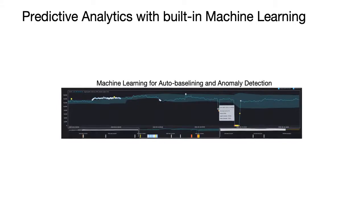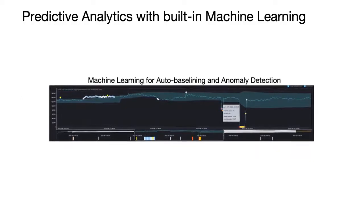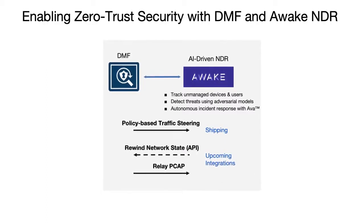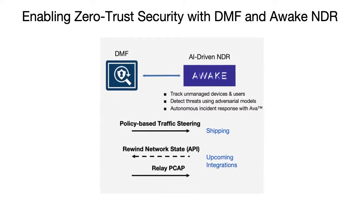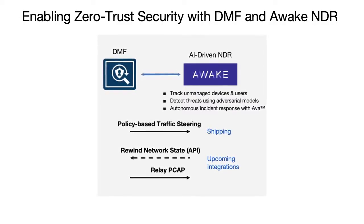The analytics node's machine learning capability dynamically identifies anomalous network behavior through auto-baselining. DMF integrates with Awake Security, Arista's recent security acquisition, to deliver traffic to various network detection and response ingest points, thus bringing zero-trust security to enterprises. DMF's scale-out fabric ensures that NDR security tools receive all the relevant traffic to detect and hunt threats. Through API integrations, the NDR can also programmatically interact with DMF's network time machine to rewind the network state and access PCAP for replaying the attack.